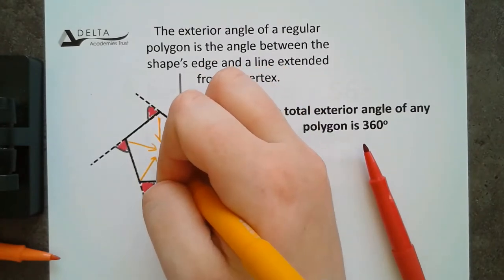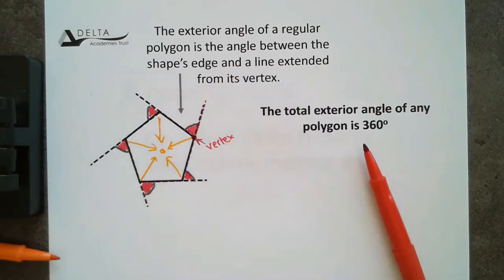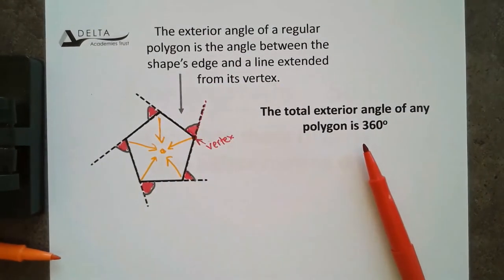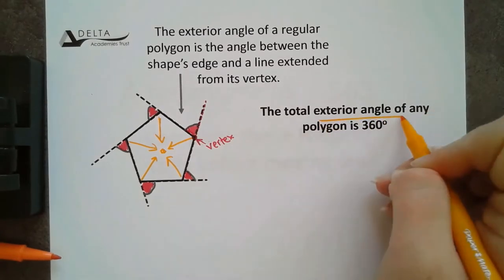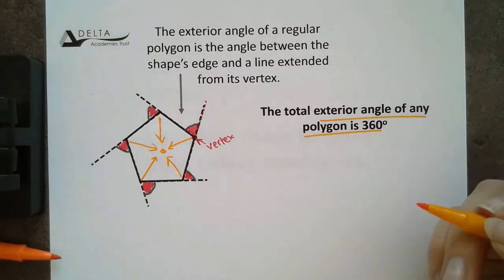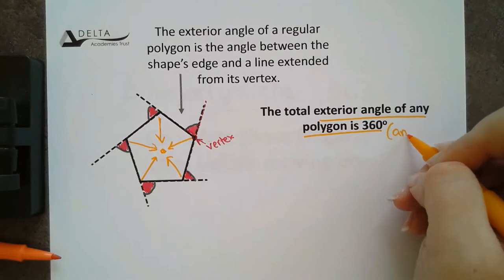That gives us the rule that the exterior angles of those polygons is 360. It's the same as angles around a point.